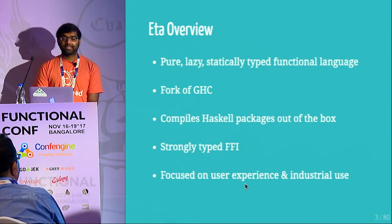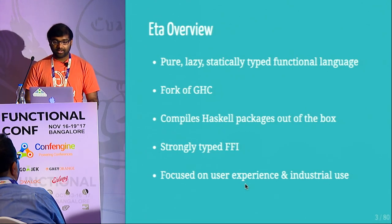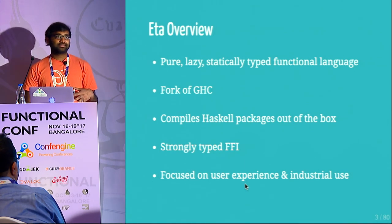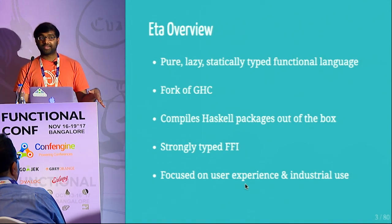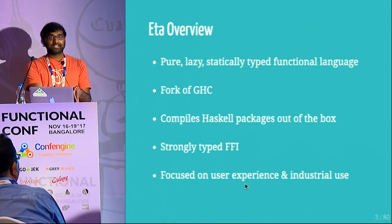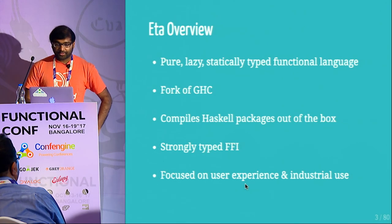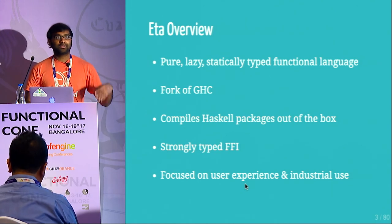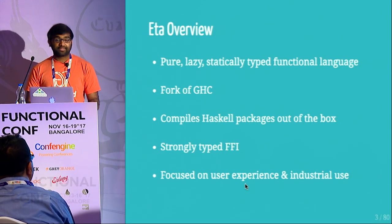So now let's talk about ETA itself. It's a pure, lazy, statically typed language that runs on the JVM, and it's a fork of GHC. What this means is ETA has access to all the major type system features, all the major optimizations, and the optimizer of GHC. The only thing that changes is the backend, which generates GHC's intermediate representations into Java bytecodes. A cool part is that we can compile Haskell packages out of the box, so even though we haven't spent much time building libraries, we already have access to a bunch of them.